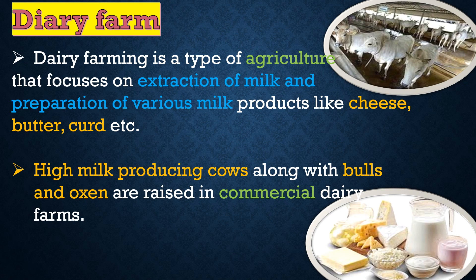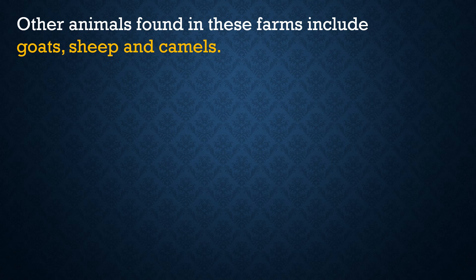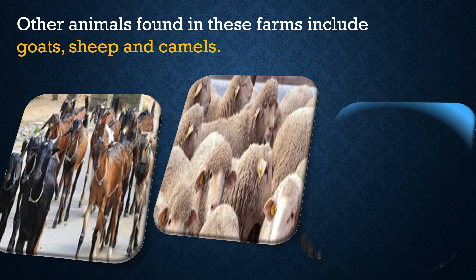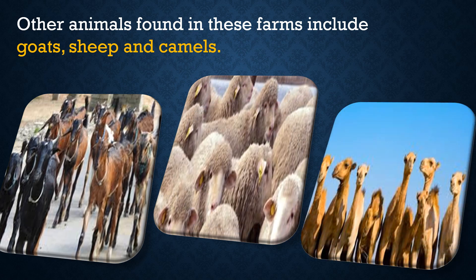High milk-producing cows are kept in dairy farms, along with bulls and oxen. Other animals found in these farms include goats, sheep and camels.